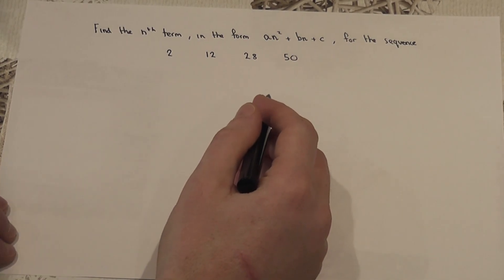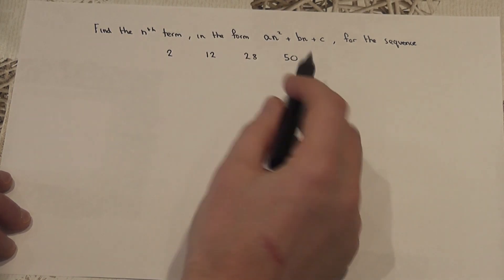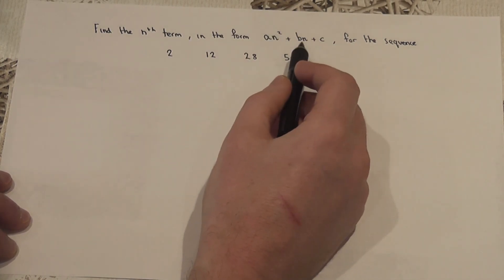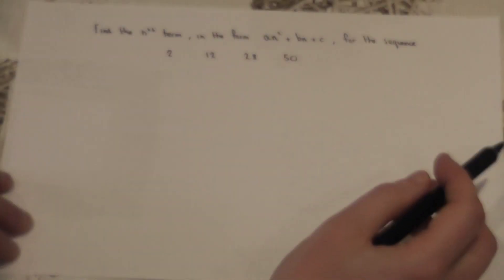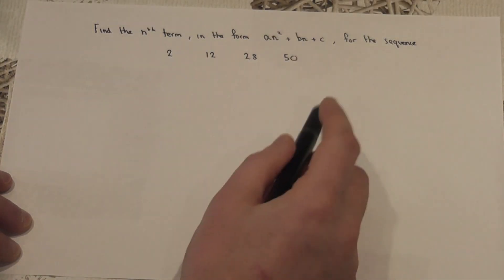In this video, we review finding the nth term of a sequence in the form a n squared plus b n plus c. This is a quadratic sequence, hence the n squared term, for the following reason.